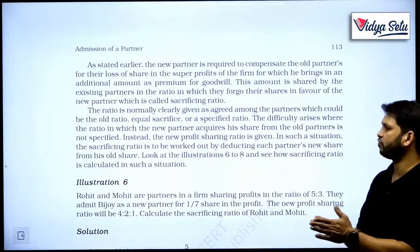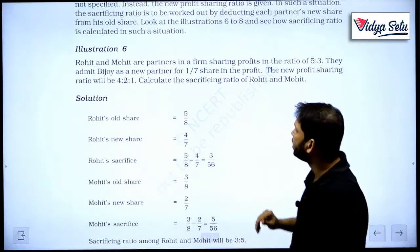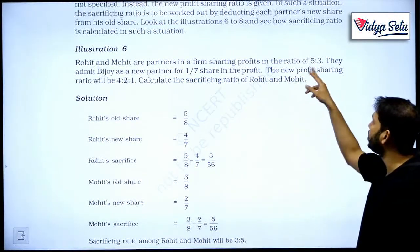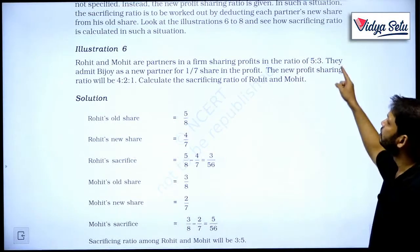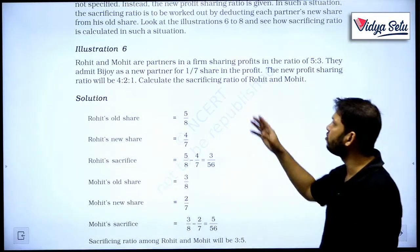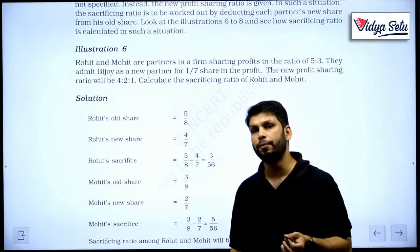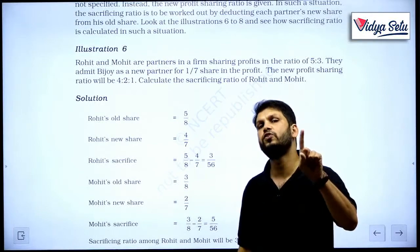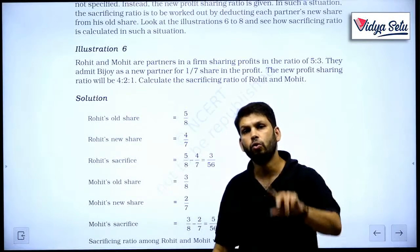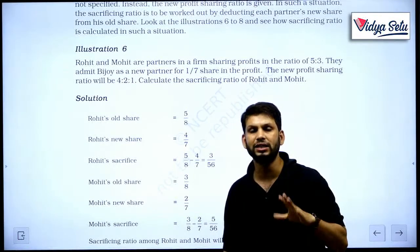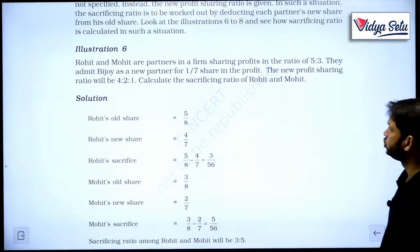Look at the illustration 6 to 8 to see how sacrificing ratio works. So let's see. In illustration 6, Rohit and Mohit are partners in a firm sharing profits in the ratio 5 is to 3, so 5 upon 8 for Rohit and 3 upon 8 for Mohit. They admit Bejoy as a new partner for 1 upon 7 share in the profit. Now Bejoy's total share will be 1 upon 7. So out of 1 total profit, if I assume 1 upon 7 went to Bejoy, how much is remaining for these two, Rohit and Mohit? Only 1 minus 1 upon 7, that is 6 upon 7.